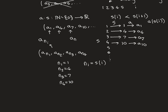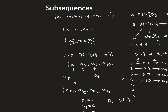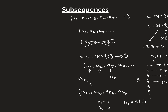The final thing I want to do is convince you that if the original sequence A is convergent, then all subsequences are also convergent and converge to the same limit. So if the limit as n→∞ of A_n equals L, then the limit as i→∞ of A_{n_i} is also L, and that holds true no matter which subsequence you take.